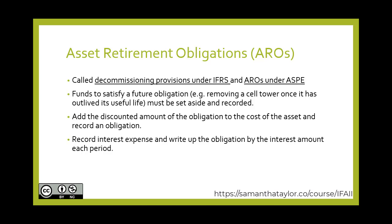What we need to do is figure out how much it will cost in the future to reclaim the land and bring it back to its original state, then discount it back so that it's in today's dollars. We take that present value amount and add it to the cost of the asset — we debit the asset and set up a separate ARO or decommissioning provision liability. Then each year, we increase that liability with a corresponding offset to finance expense, because we're reflecting the passage of time.